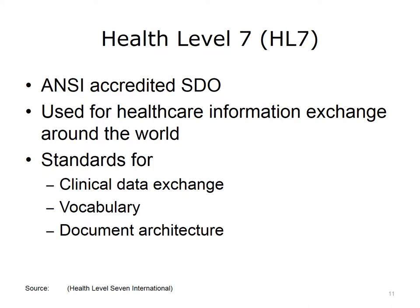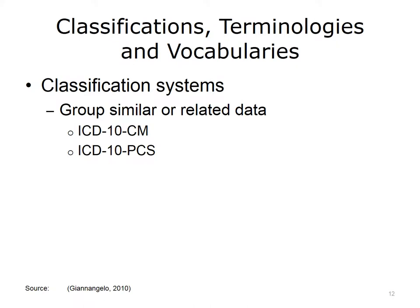Now, let's look at some of the standardized terminologies. Before we go into the details of the different systems, we need to distinguish between classifications, terminologies, and vocabularies. Classification systems are designed to group similar or related data. One use of classification systems is for external reporting for a variety of purposes, including reimbursement. One example of a classification system is the International Classification of Diseases, 10th Revision, Clinical Modification, known as ICD-10-CM, that is used for reporting the principal diagnosis for which a patient is admitted to the hospital and other diagnoses which affect care. ICD-10-CM is also used to report the reason the patient is seen in the outpatient setting. With ICD-10-CM, asthma diagnoses are grouped or classified together under the same category code.